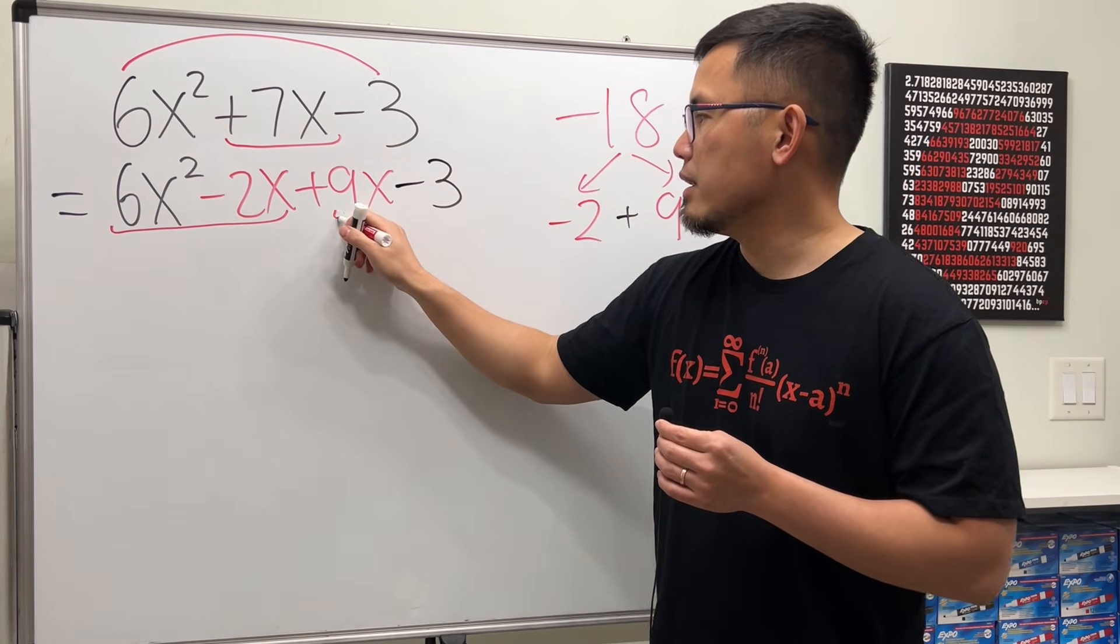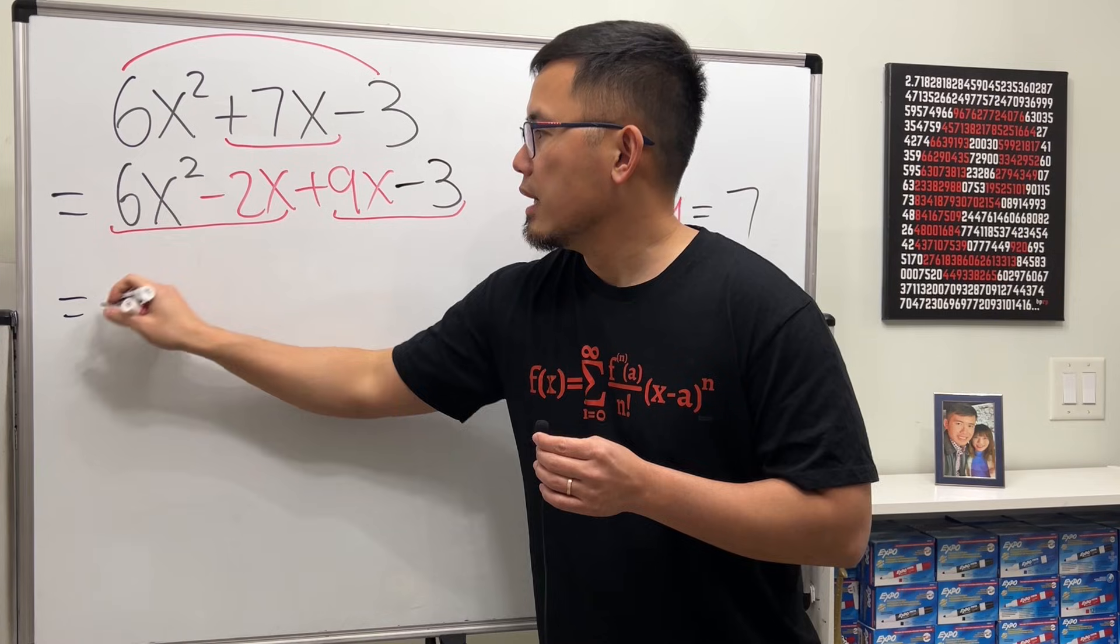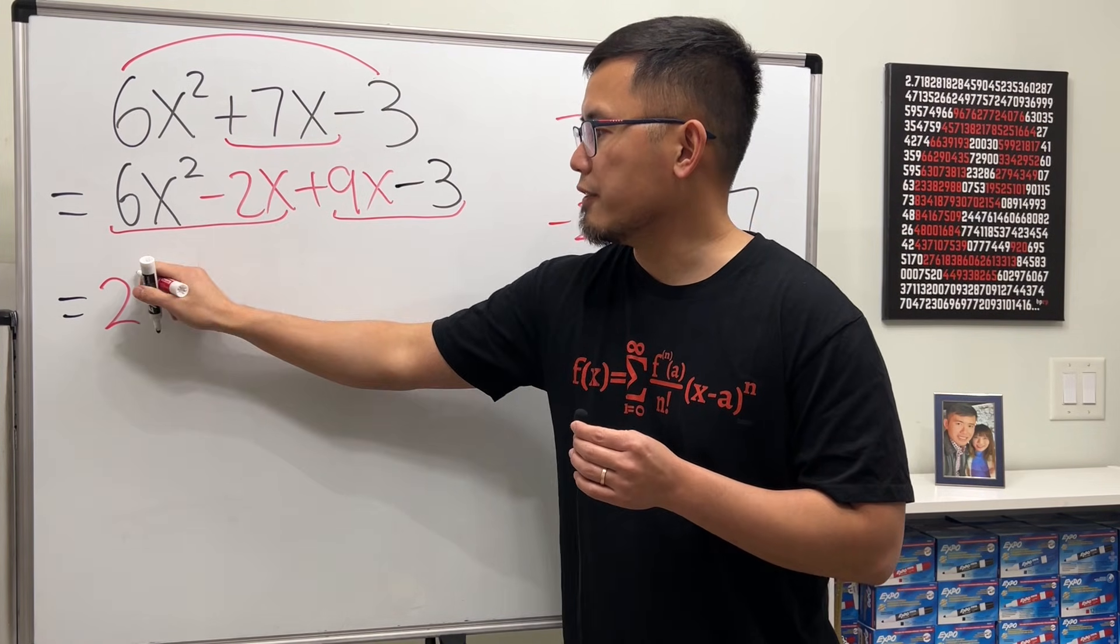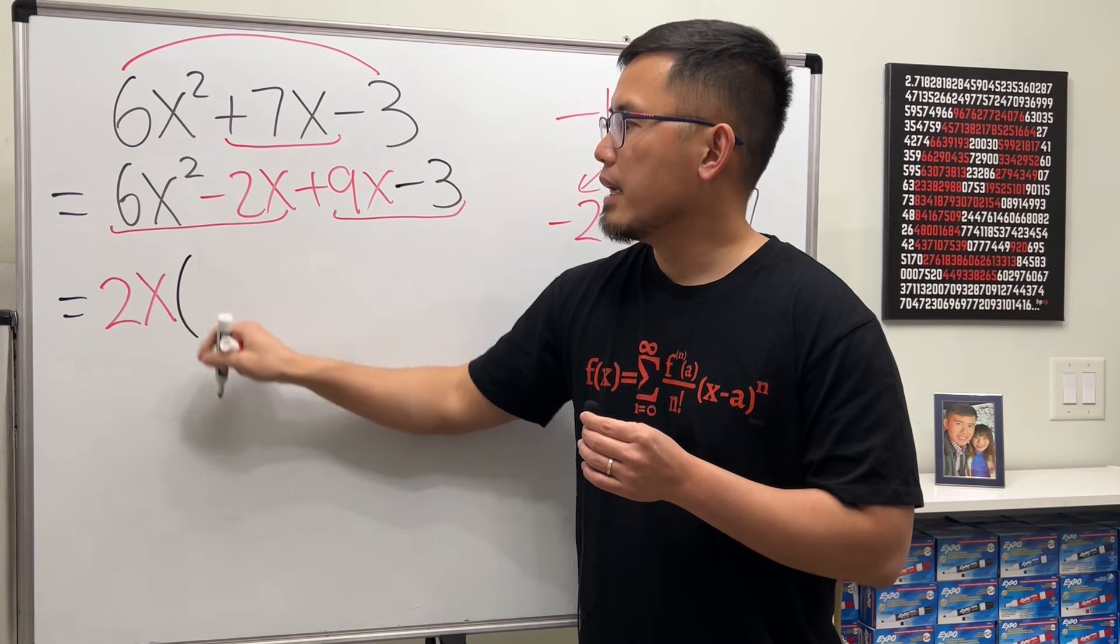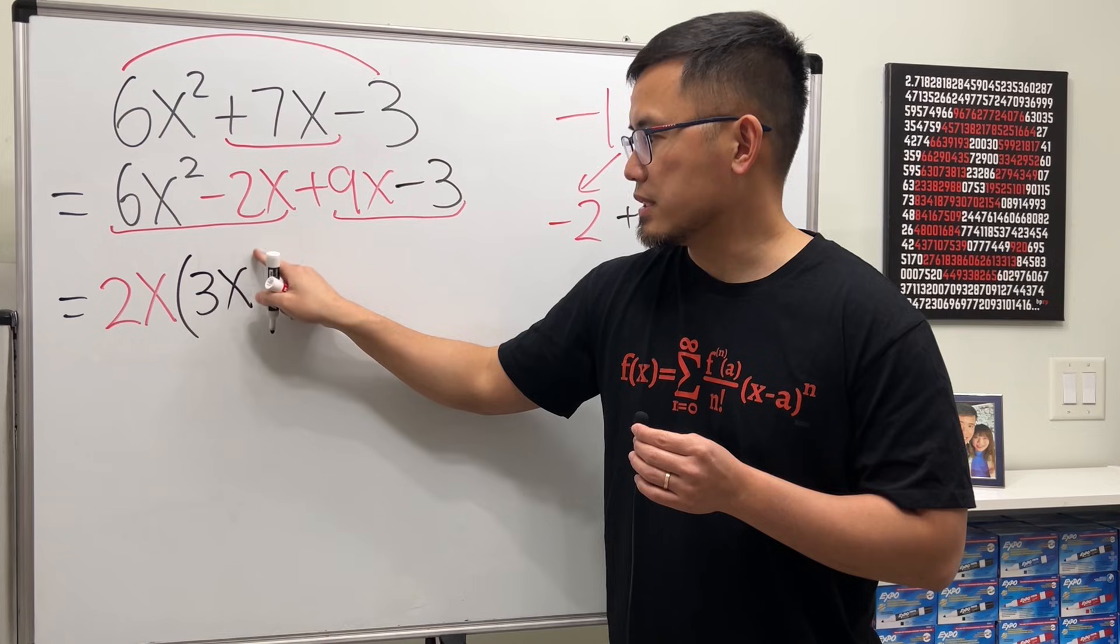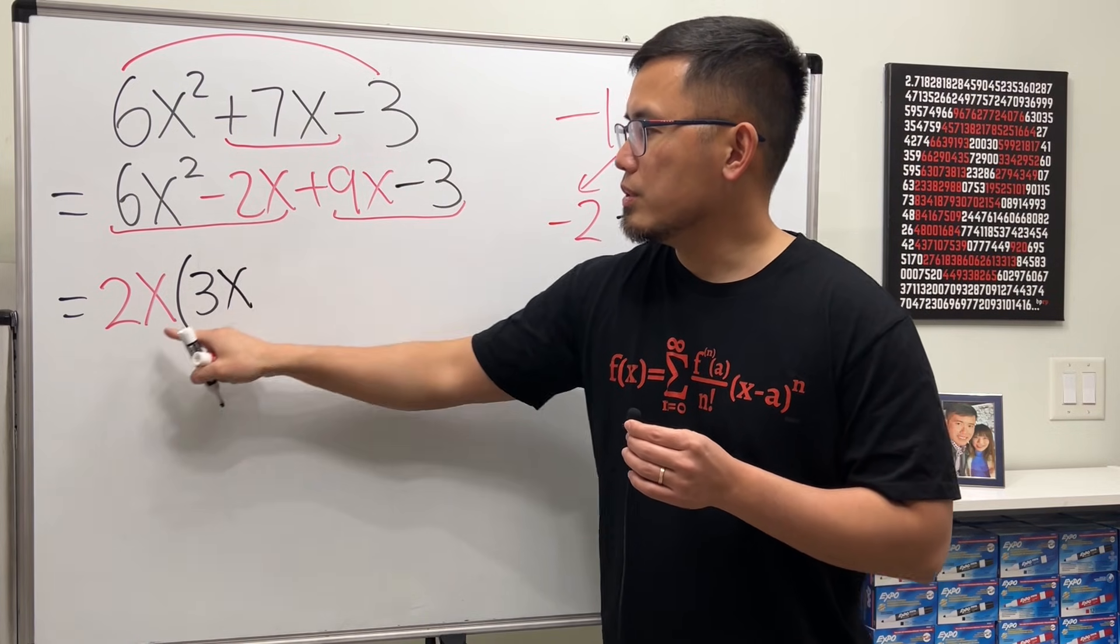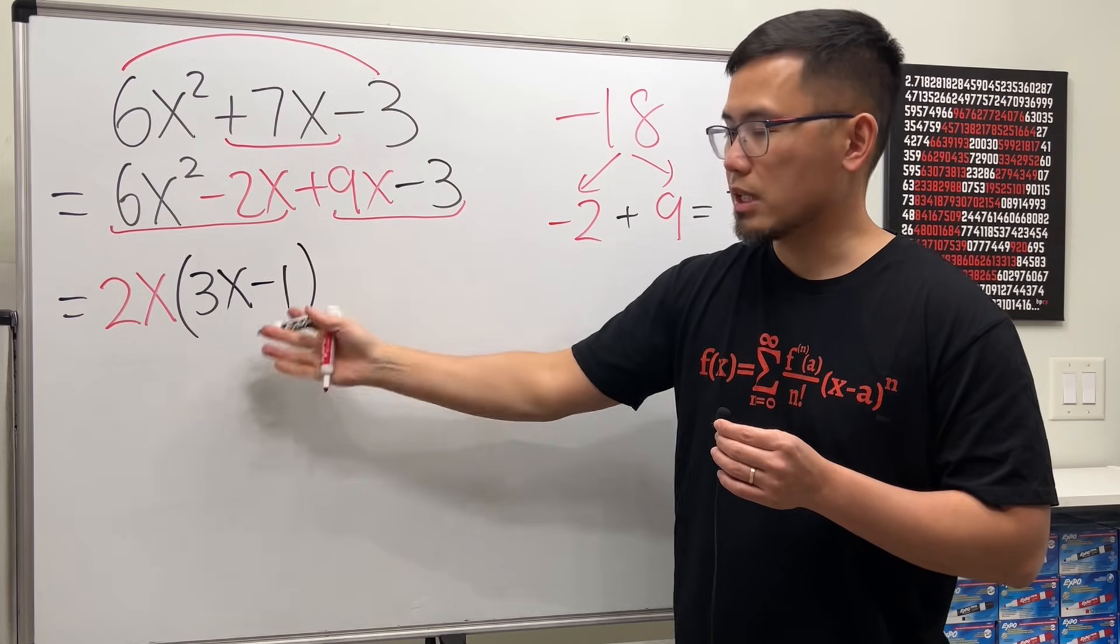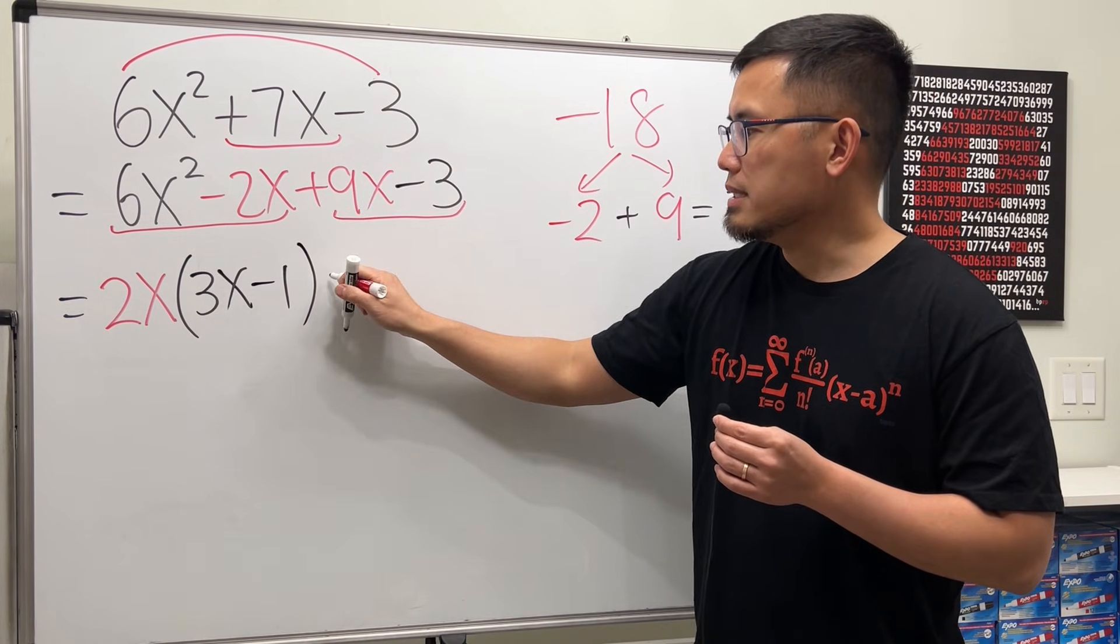Now we have 4 terms. We can do this by grouping. The first 2 and then the last 2. 6 and 2, we can factor out 2. x squared and x, we can factor out x. 6 divided by 2, we get 3. x squared divided by x, we get x. Minus 2 divided by 2 is minus 1. So that's what we have. Then, put down the plus.